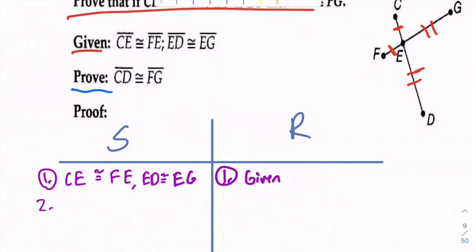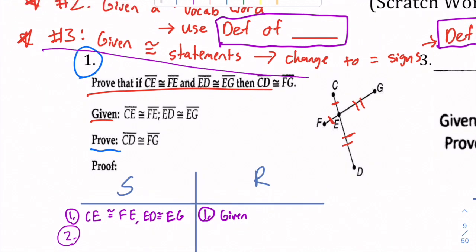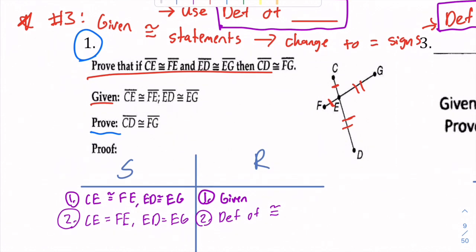Next, step two. This is where we're going to use hint number three here. We have congruent statements. So right now, I want to get rid of those. So my next step is just simply writing CE is equal to FE, and ED is equal to EG. The reason for that is simply definition of congruence. Now you're like, okay, what do I do? I don't know what to do now.